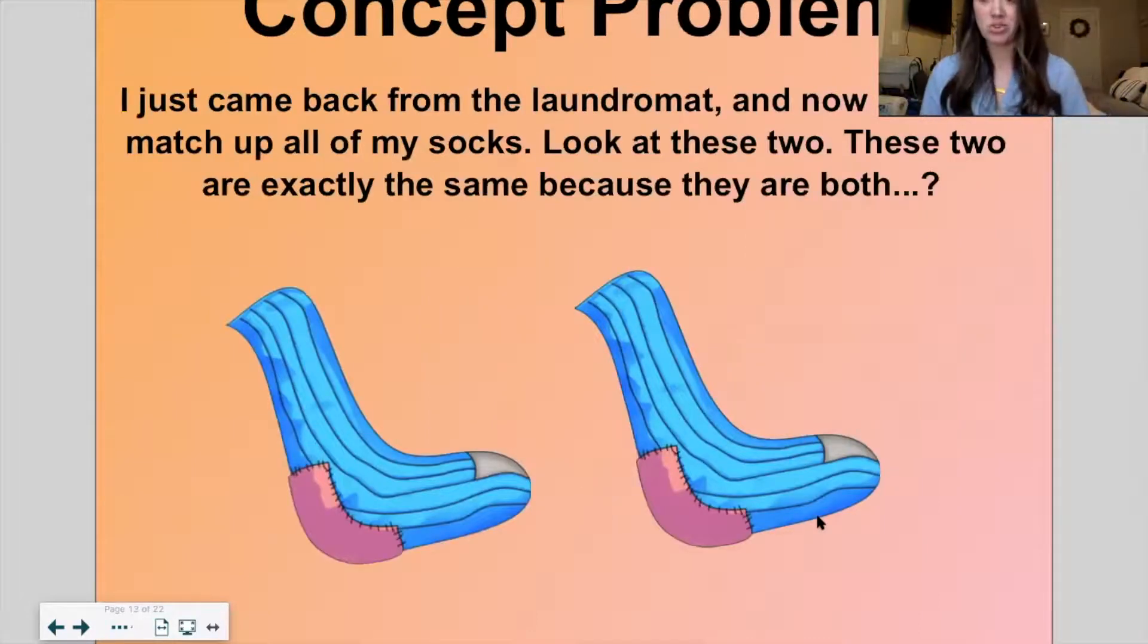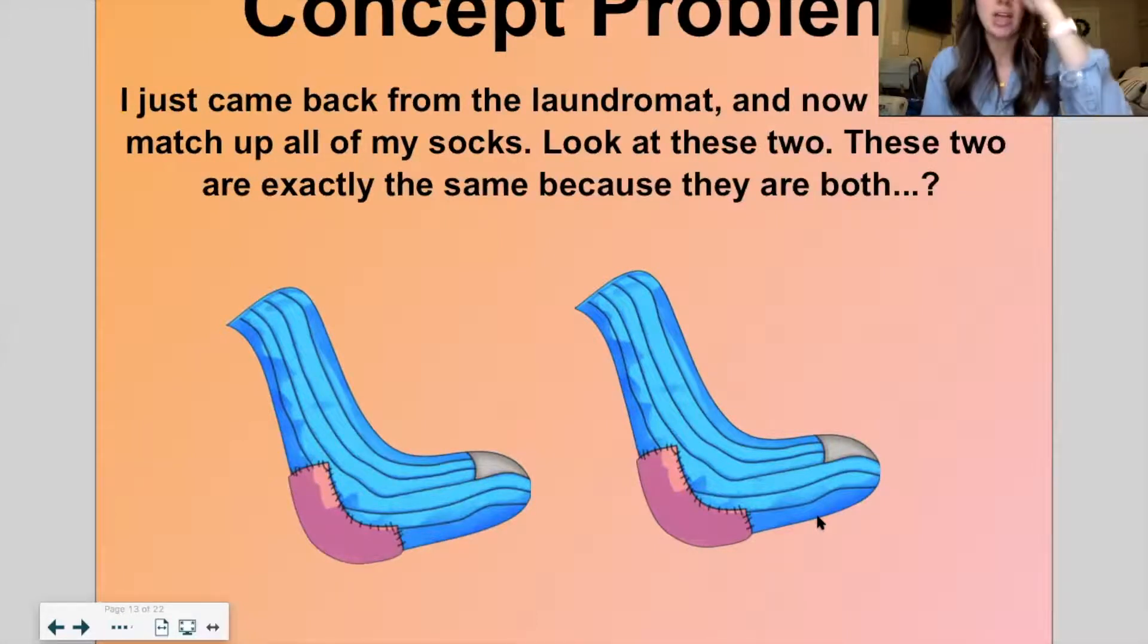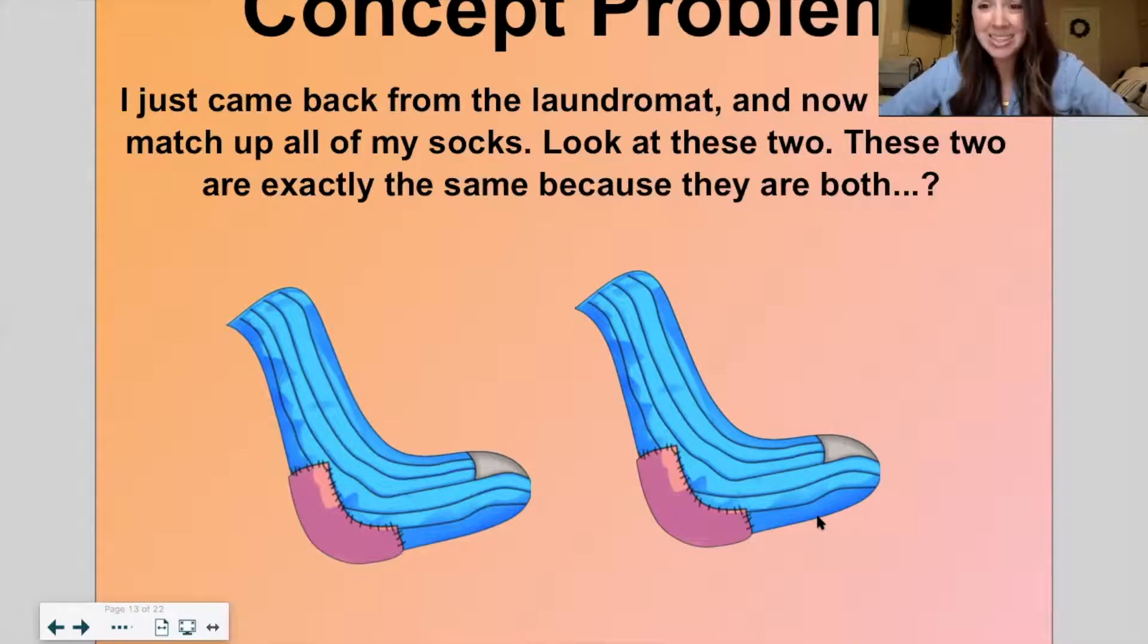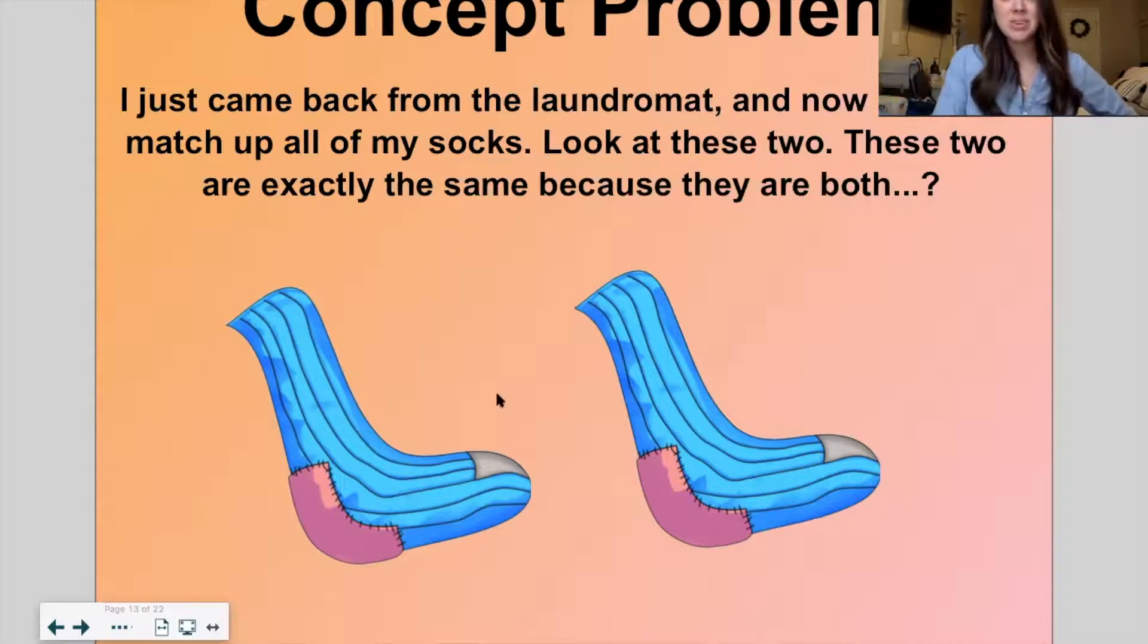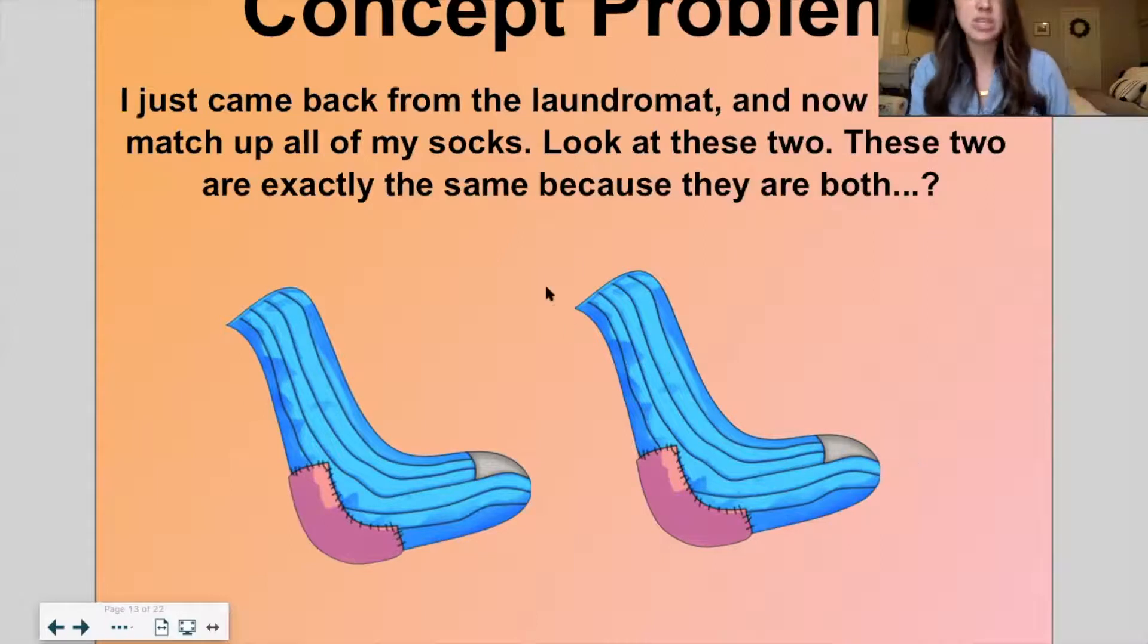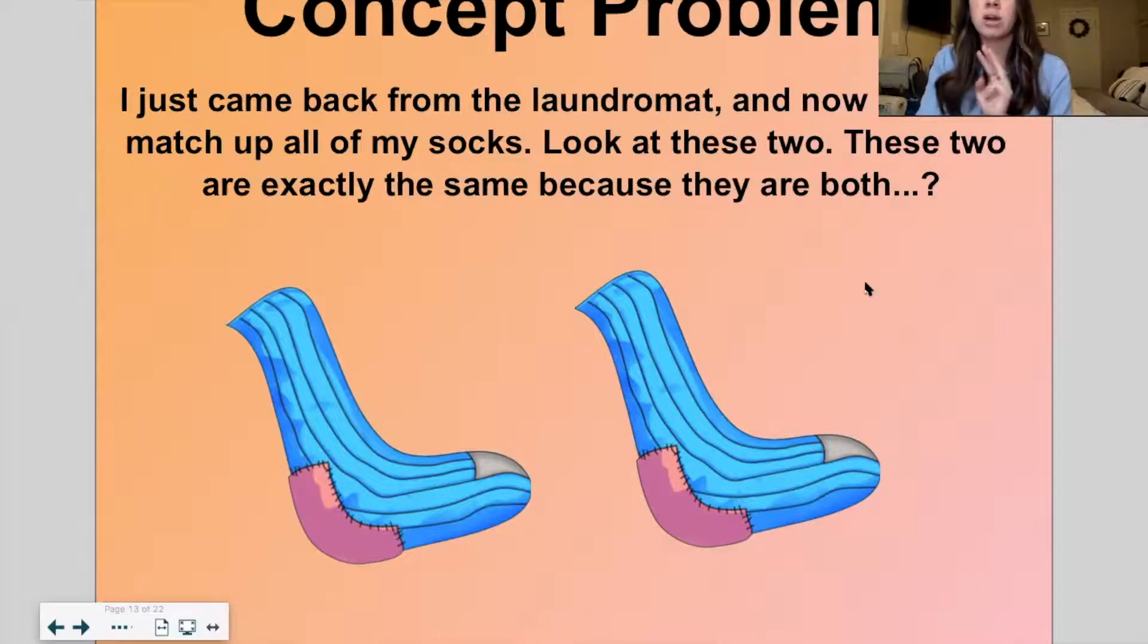Let's look at some other socks and let's see what we can figure out here. I just came back from the laundromat. I like to do laundry. I don't like to roll it and put it away, but I like to do laundry. Now I have to match up all my socks. Look at these two. These two are exactly the same because... So why? Tell your mom, your dad, your brother, your sister, or aunt or uncle. Why are these exactly the same? Hmm. These are exactly the same because they both are blue. They both have purple heels. They both have gray toes and they have like kind of like stitching or maybe those are like stripes going down the whole sock. So those are why these two socks are exactly the same.